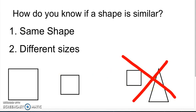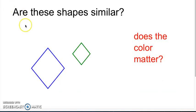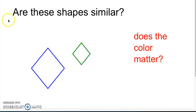Let's test out our skills to find if shapes are similar. Are these shapes similar? Over here I see a blue diamond and over here I see a green diamond. They're both diamonds, so that will make them similar because they are the same shape. Does the color matter? Nope. Remember, the color doesn't matter in similar or congruent shapes.